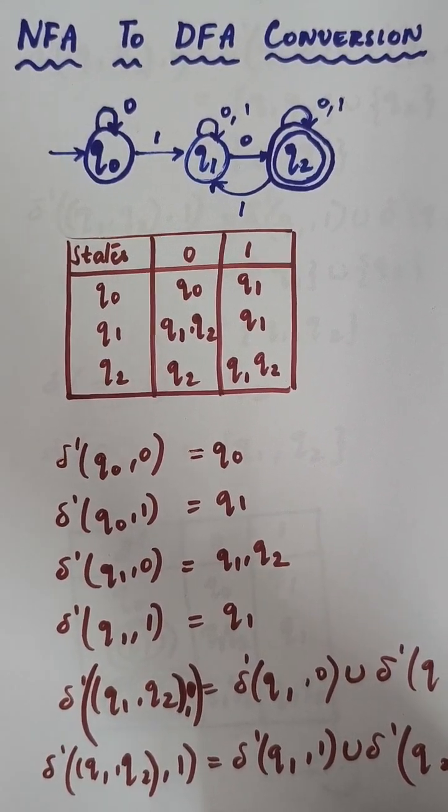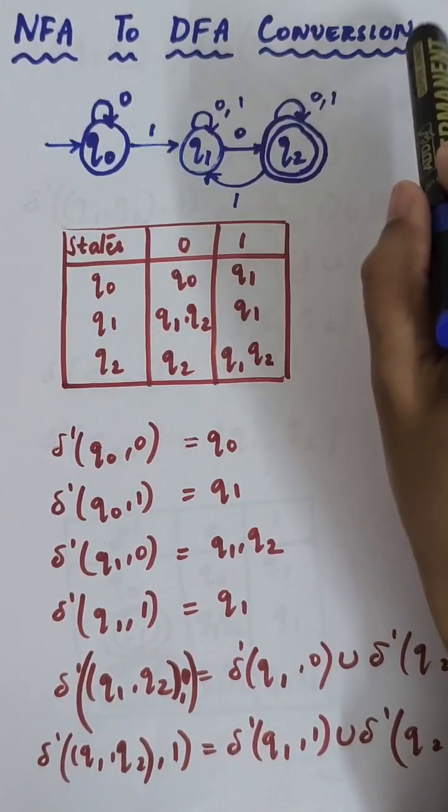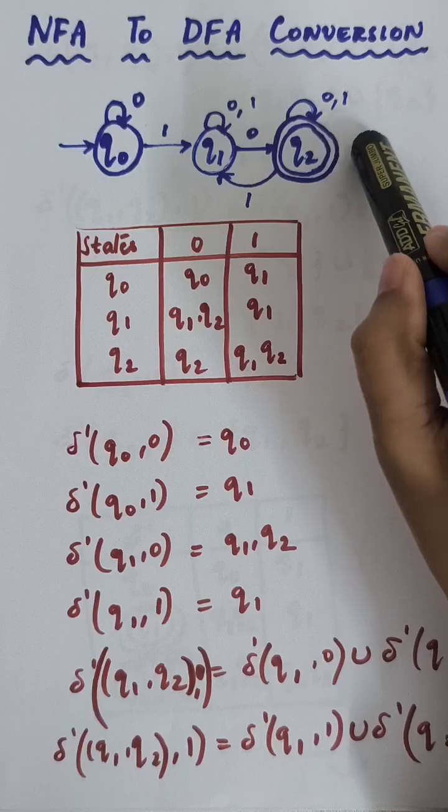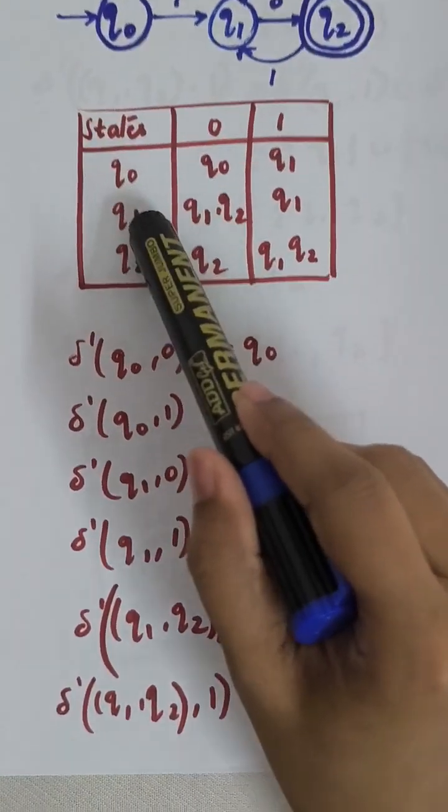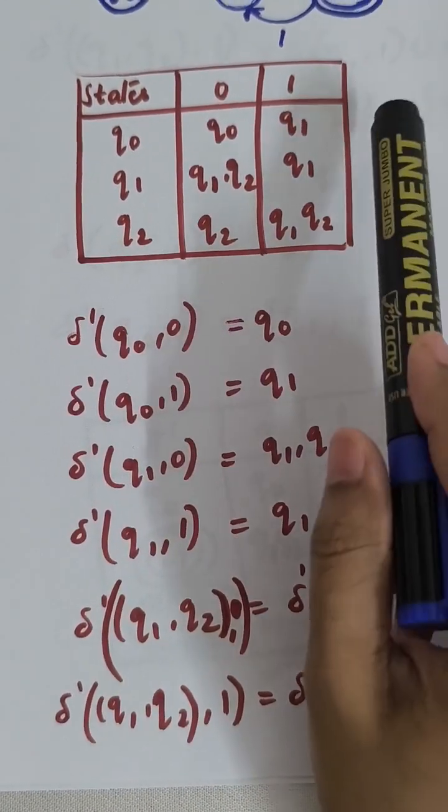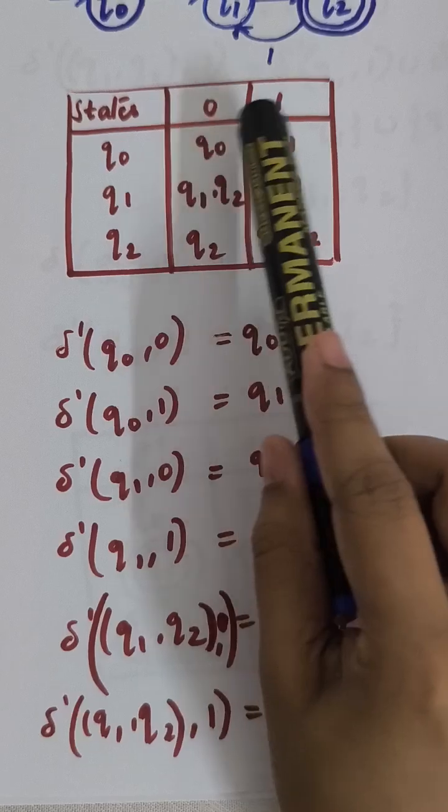Progressors, welcome to EF study space. Today we will see NFA to DFA conversion. We have got an NFA here with states Q0, Q1 and Q2. This is the transition table with transitions on 0 and 1.